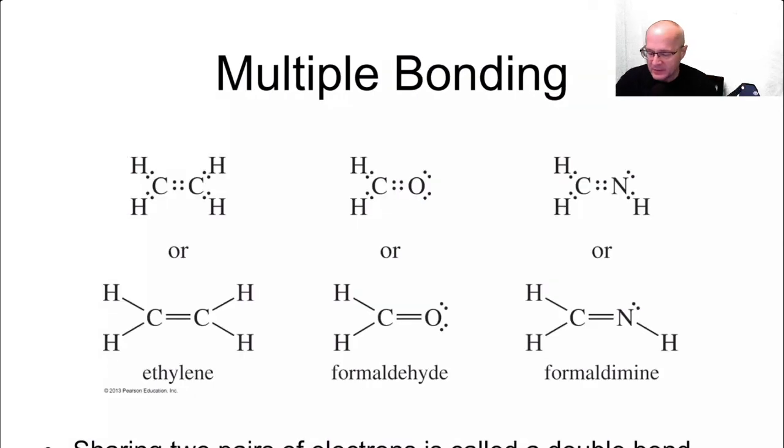Multiple bonding. Yes, atoms can make multiple bonds in order to achieve the octet. There are single bonds, which I've already shown you, and I'll show you one on here again. Here's a single bond right here. It counts for two electrons. This is a double bond, and that counts for four electrons.